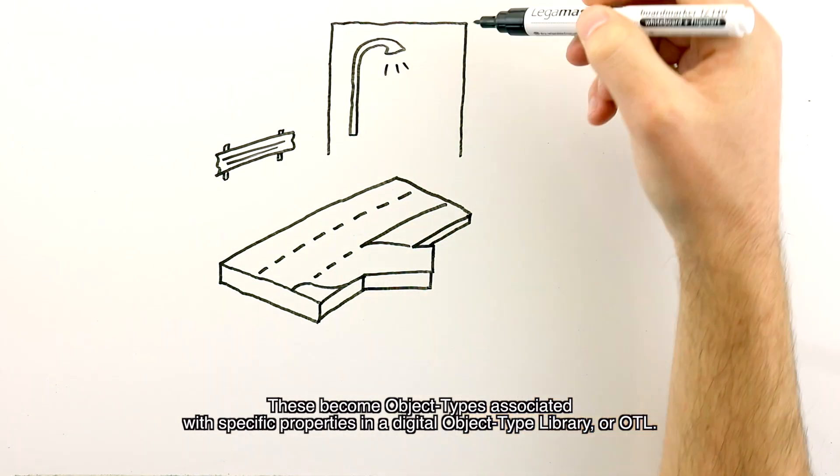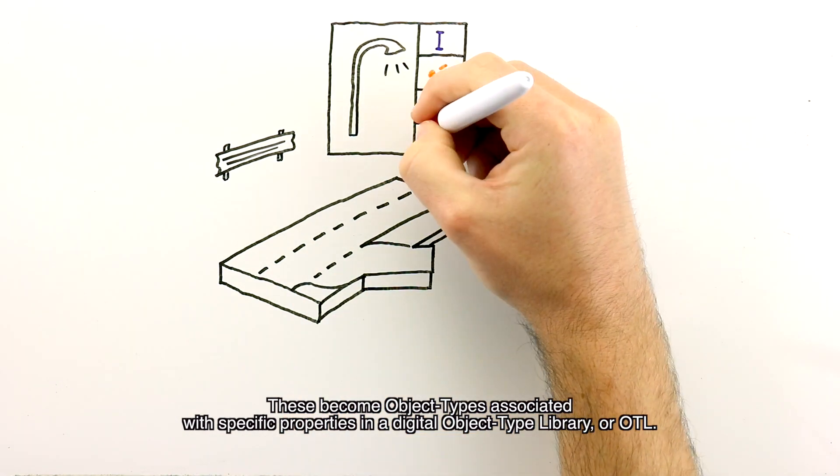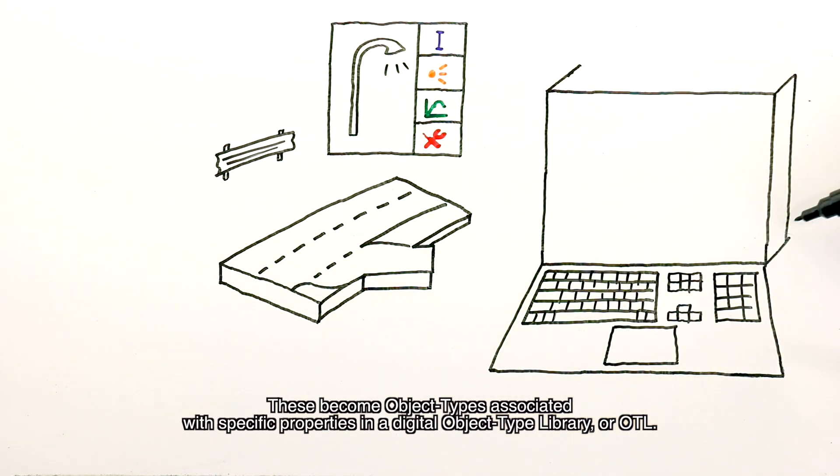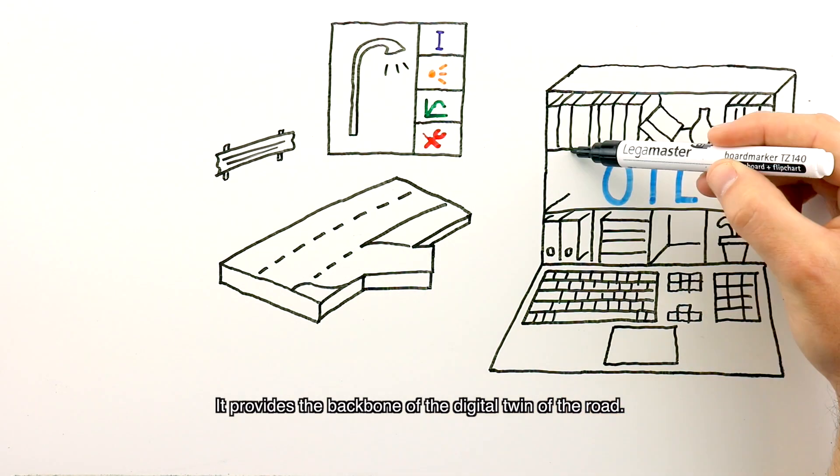These become object types associated with specific properties in a digital object type library or OTL. It provides the backbone of the digital twin of the road.